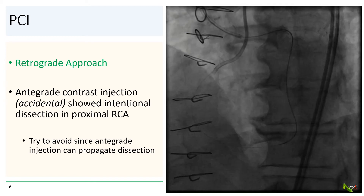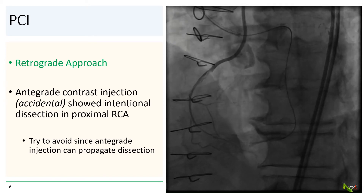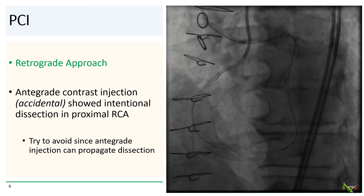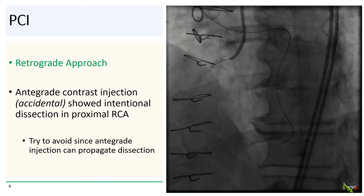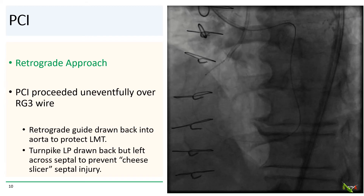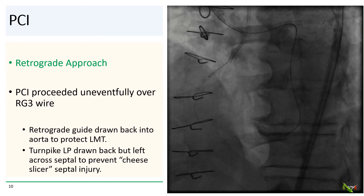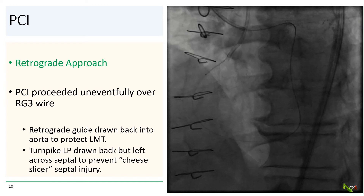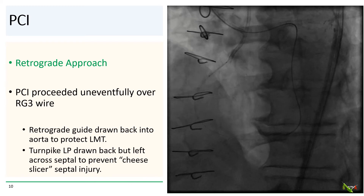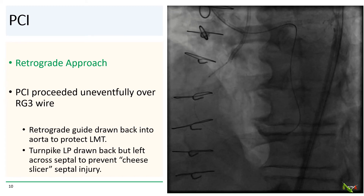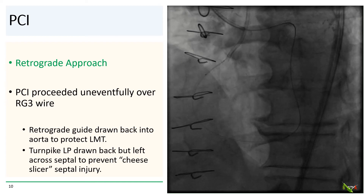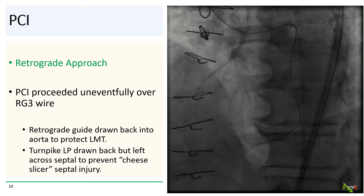An accidental contrast injection here demonstrated the intentional dissection in the proximal RCA. This is a bit of an oopsie, as an antegrade injection at this point can hydraulically propagate the dissection — thankfully, that was not the case here. Note that we intentionally pulled the retrograde guide back into the aorta to protect the left main, and the Turnpike LP was pulled back to allow stenting but was purposely left across the collateral to prevent the septal injury from a cheese slicer effect that can happen with force on the externalized wire.